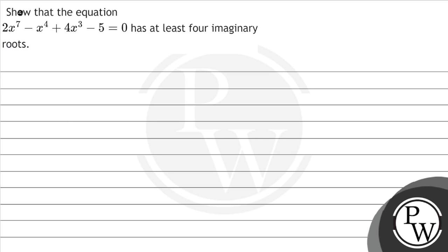Hello, let's read the question. The question says, show that the equation 2x^7 - x^4 + 4x^3 - 5 = 0 has at least 4 imaginary roots. In this question, we have to show that the equation has at least 4 imaginary roots.